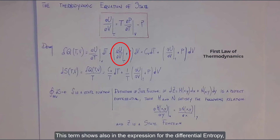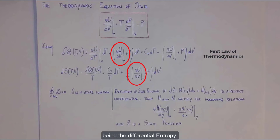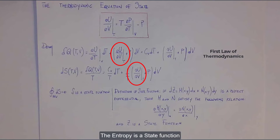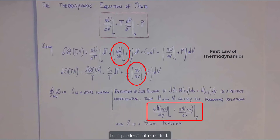Second consideration: this term also appears in the expression for the differential entropy, the differential entropy being obtained from the expression for the heat coming from the first law of thermodynamics. Third consideration: the entropy is a state function and as such it respects the definition of perfect differential. In a perfect differential, the cross-derivatives of the differential are identical.